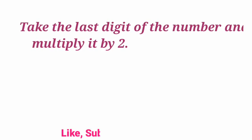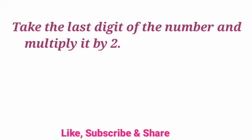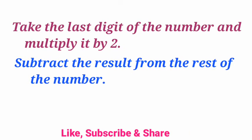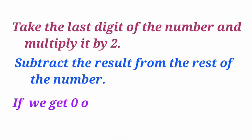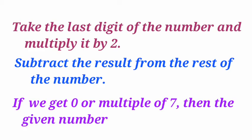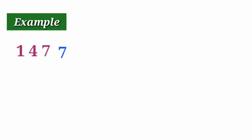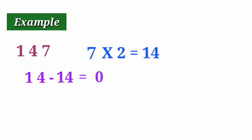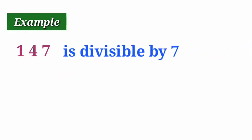Divisibility rule for 7. Take the last digit of the number and multiply it by 2. Subtract the result from the rest of the number. If we get 0 or a multiple of 7, then the given number is divisible by 7. For example, 147. Take the last digit 7 and multiply by 2: 7 times 2 is 14. Subtract from the remaining number: 14 minus 14 equals 0. So 147 is divisible by 7.